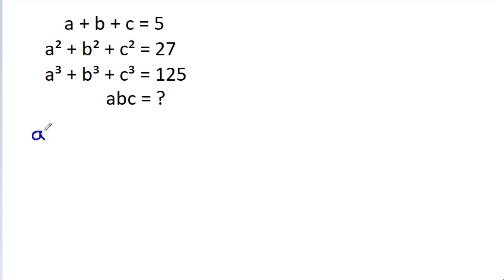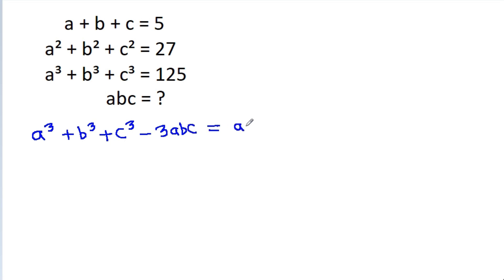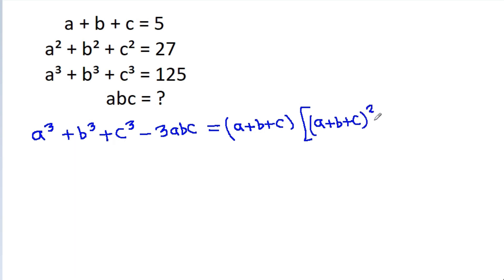So, a cube plus b cube plus c cube minus 3abc is equal to a plus b plus c times a plus b plus c whole square minus 3 times ab plus bc plus ca.